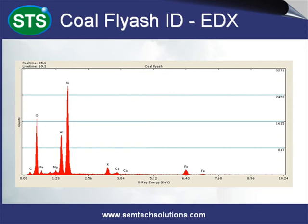EDX analysis of coal fly ash portrays moderate to strong concentrations of aluminum, silicon, and oxygen, with lower amounts of potassium, calcium, titanium, and iron.